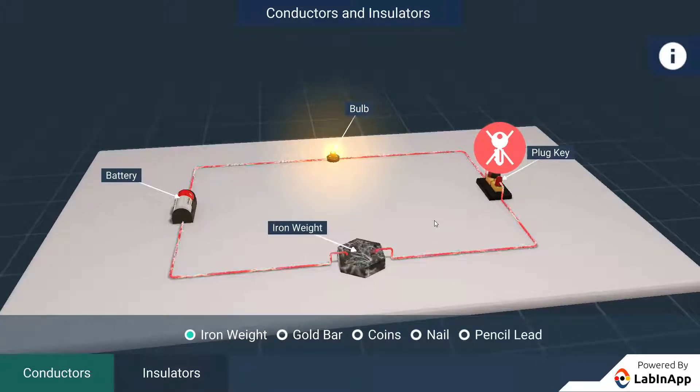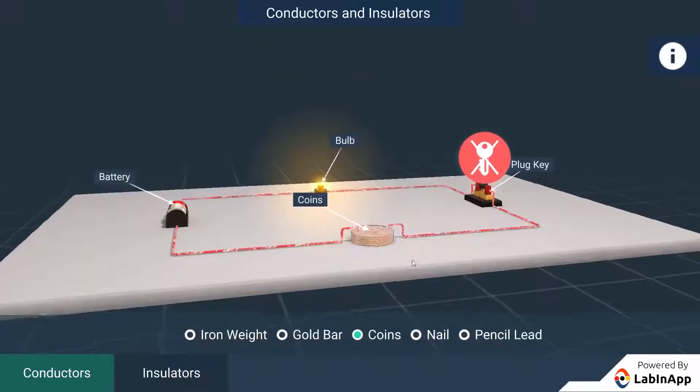Now, place some metals like coins and insulators like rubber and glass and observe.